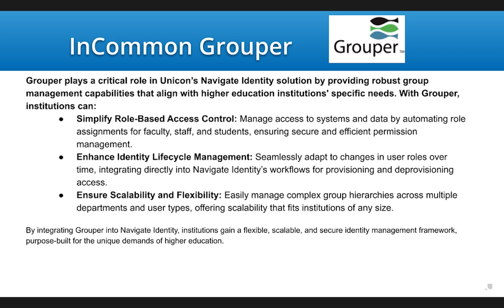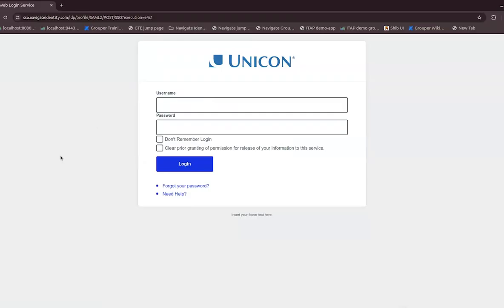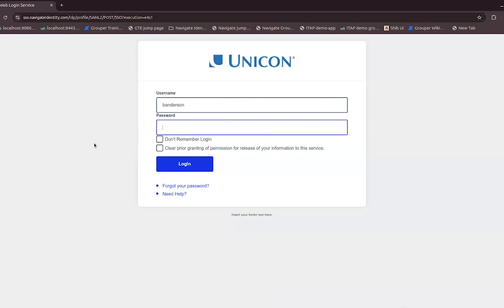The most important use of Grouper is that once an access policy has been constructed, it is published or provisioned to various targets that are your policy enforcement points. This means you don't need to go to each target and manage the policies. These include, for example, LDAP, SQL databases, Active Directory, Cloud Providers, Midpoint, and many others. Now let me demonstrate the user interface. Here I am with the same Shibboleth SSO front end that you also saw with Midpoint — a common single sign-on authentication. I'm going to log on as one of our demo users who has full access to the system so you'll be able to see all the different features of Grouper.